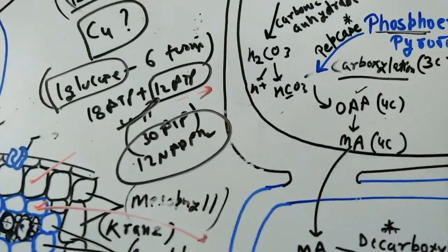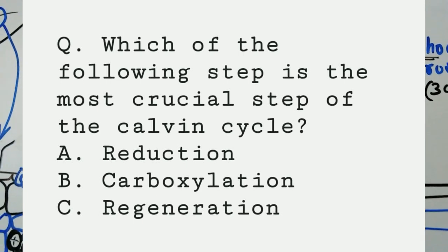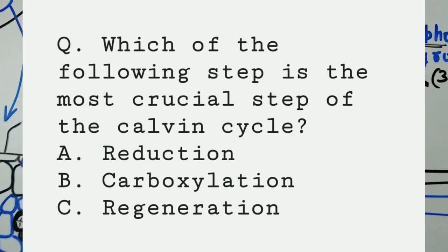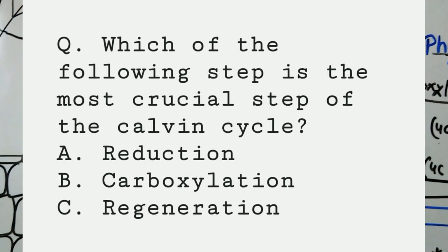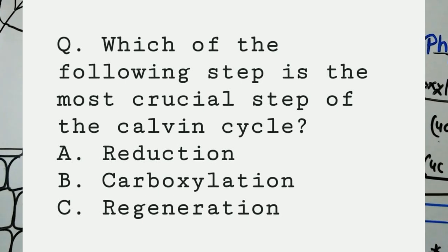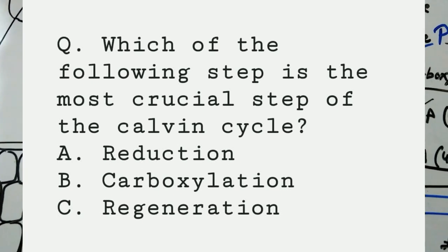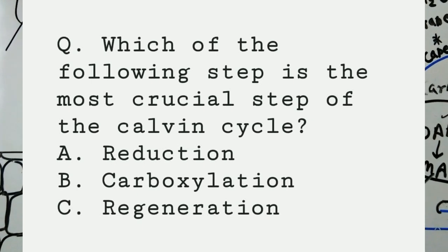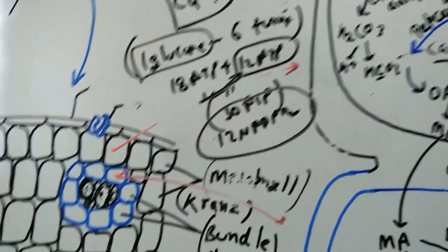On your screen you are seeing an important question: which of the following steps is the most crucial step of the Calvin cycle? The options are reduction, carboxylation, and regeneration. The answer is carboxylation. Rubisco has two activities — carboxylation and oxygenation. If oxygen concentration is higher, Rubisco binds oxygen and photorespiration occurs, which is a wasteful process. Therefore, carboxylation — the fixation of carbon dioxide — is the most crucial step of the Calvin cycle.